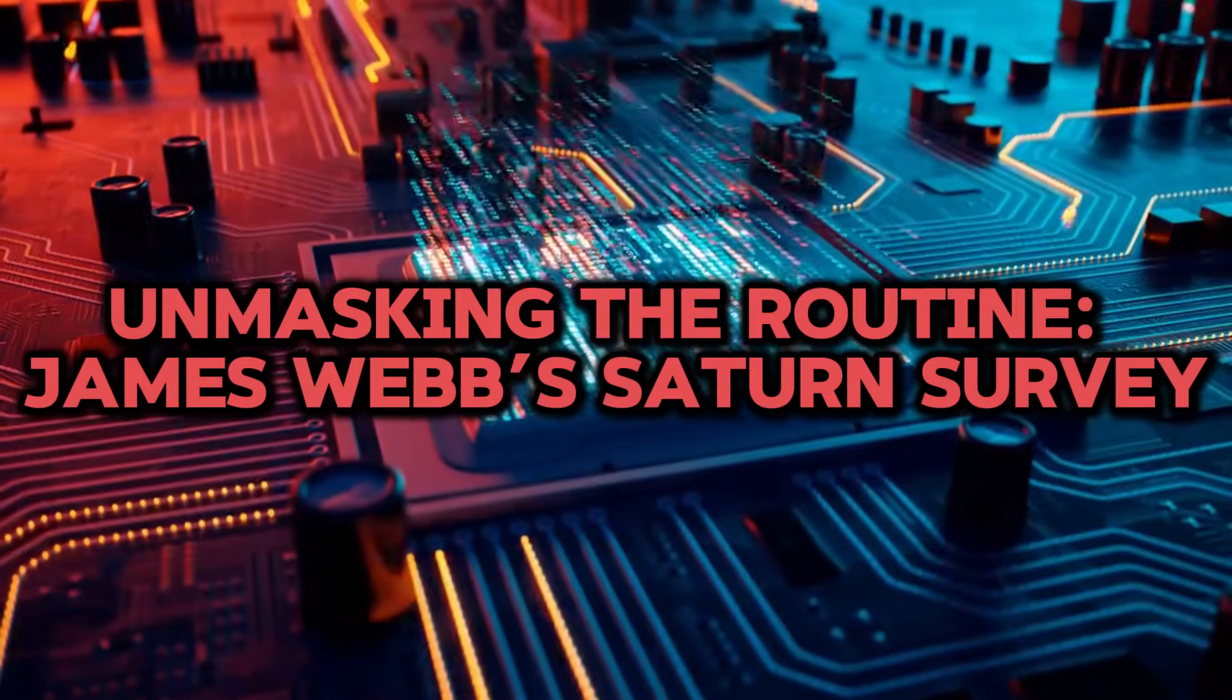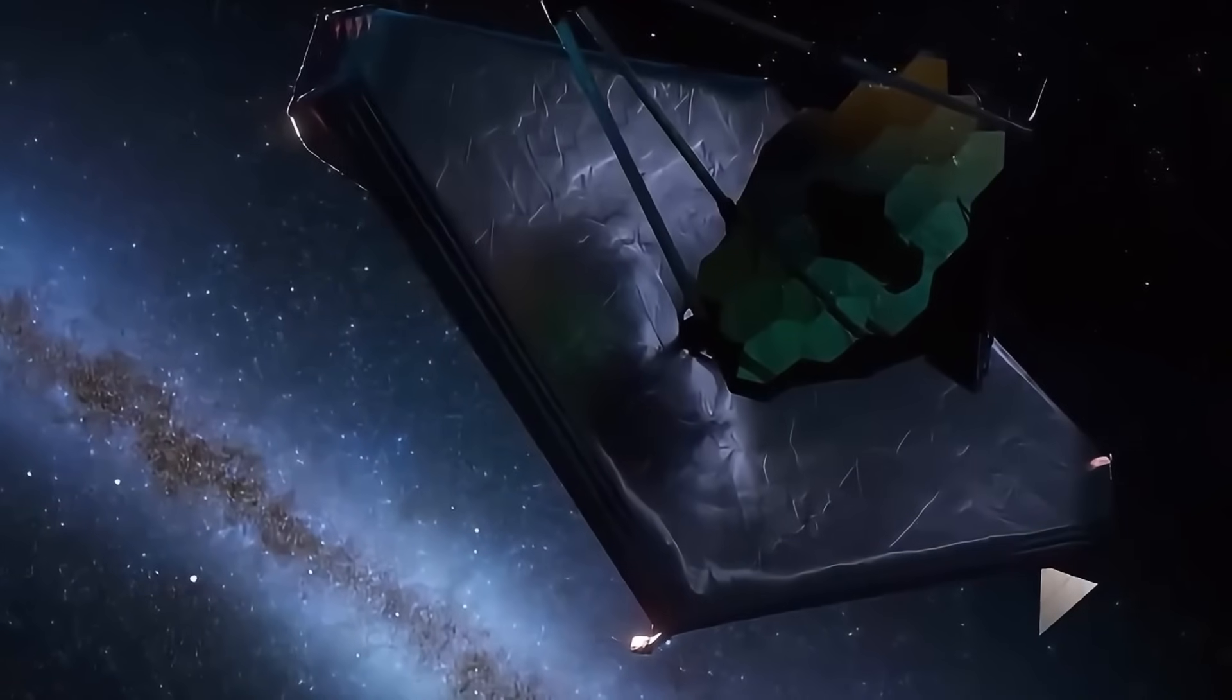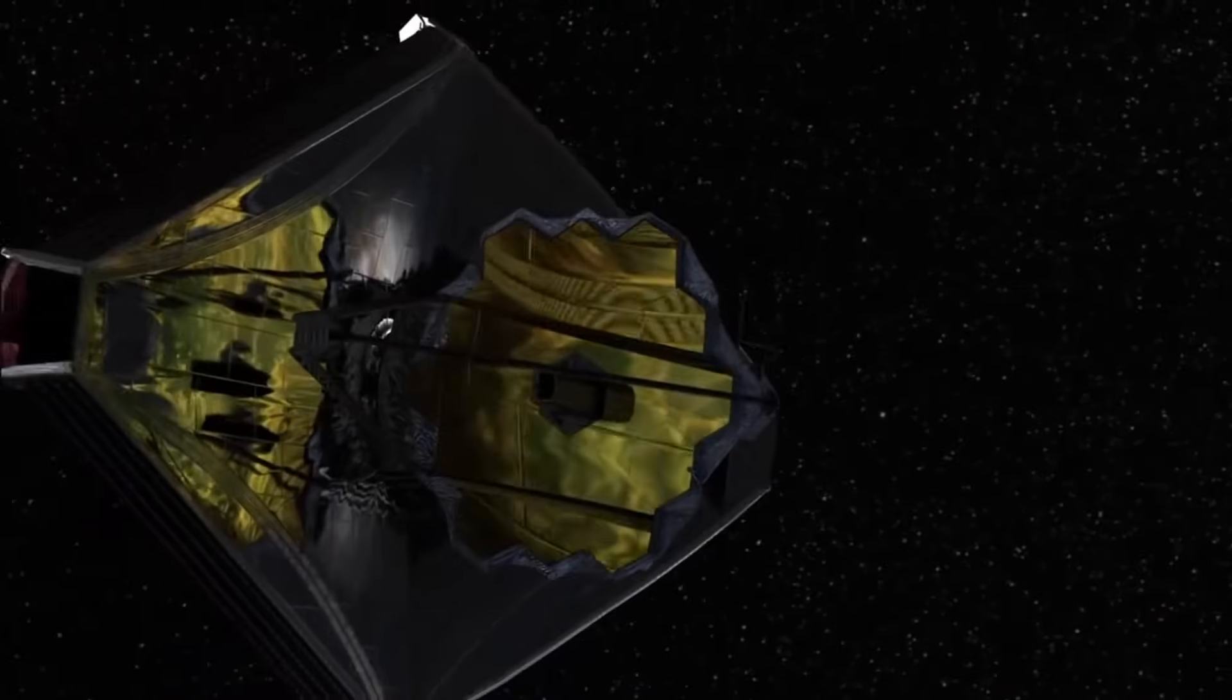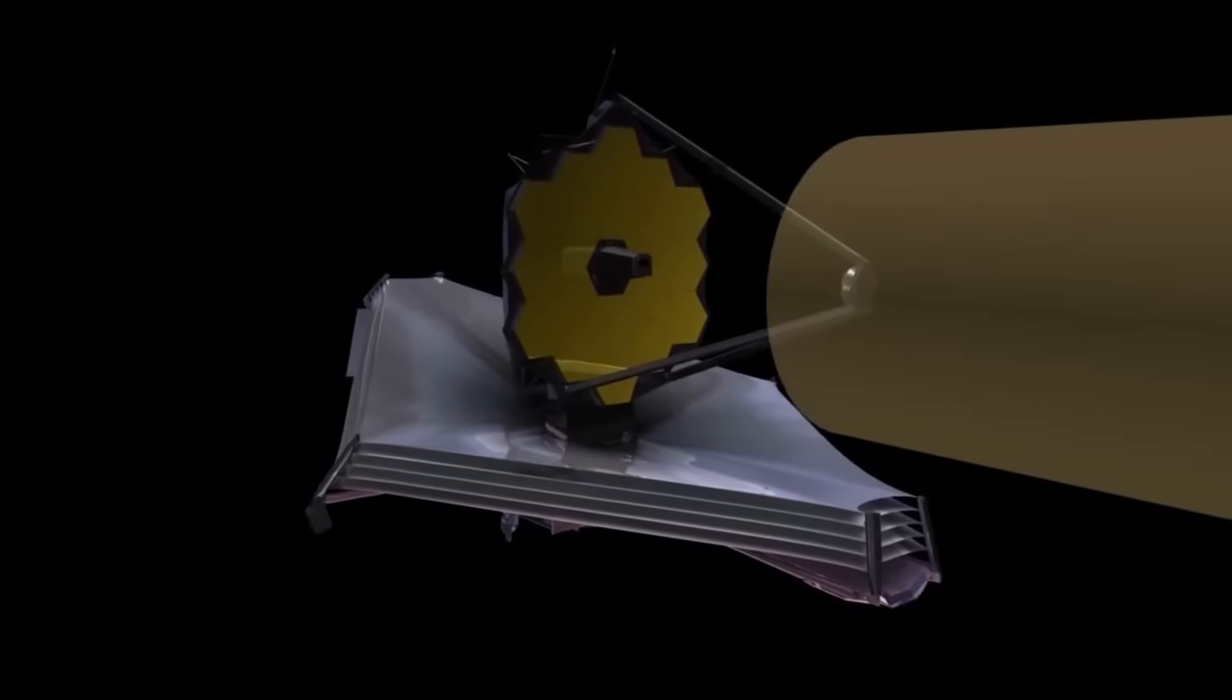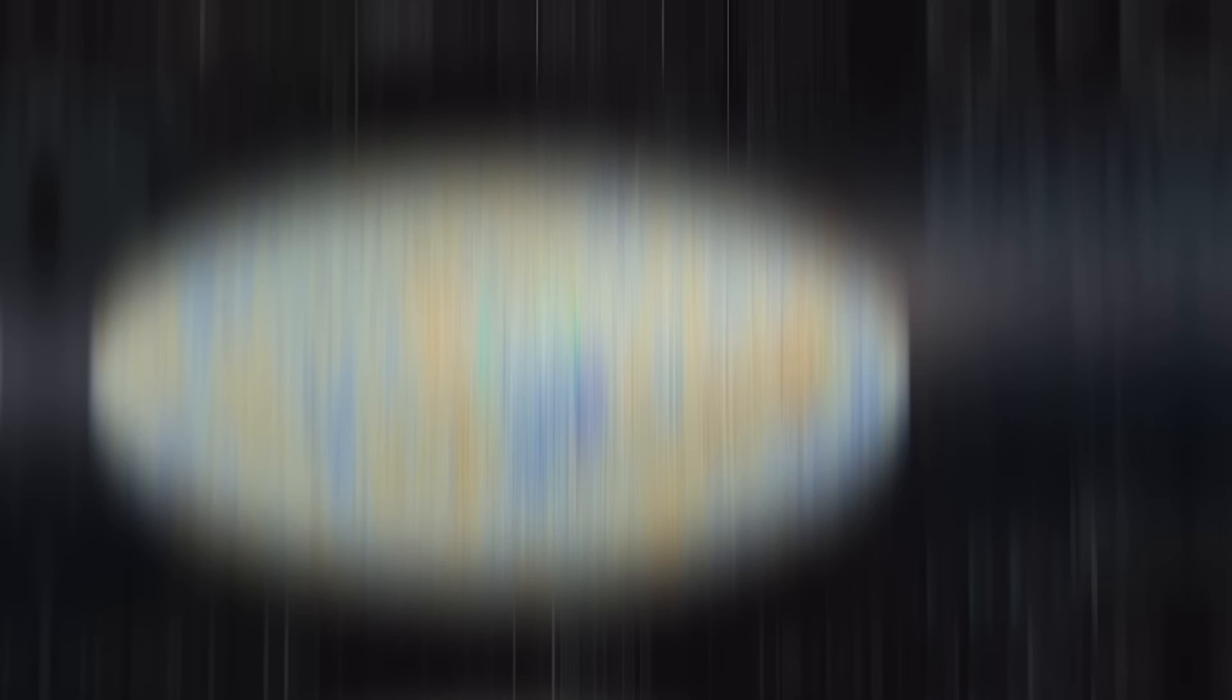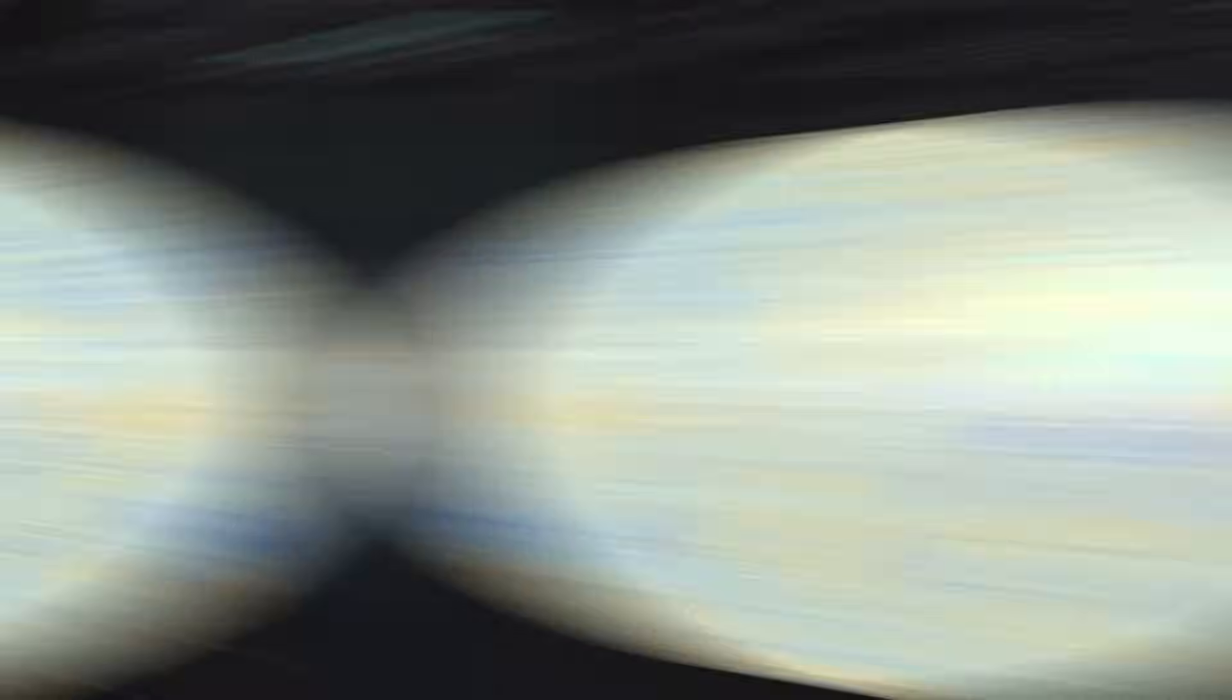The James Webb Space Telescope's 2024 campaign on Saturn was pitched as a routine atmospheric survey. Using MIRI's mid-infrared spectrometer, scientists mapped temperature gradients in the stratosphere.